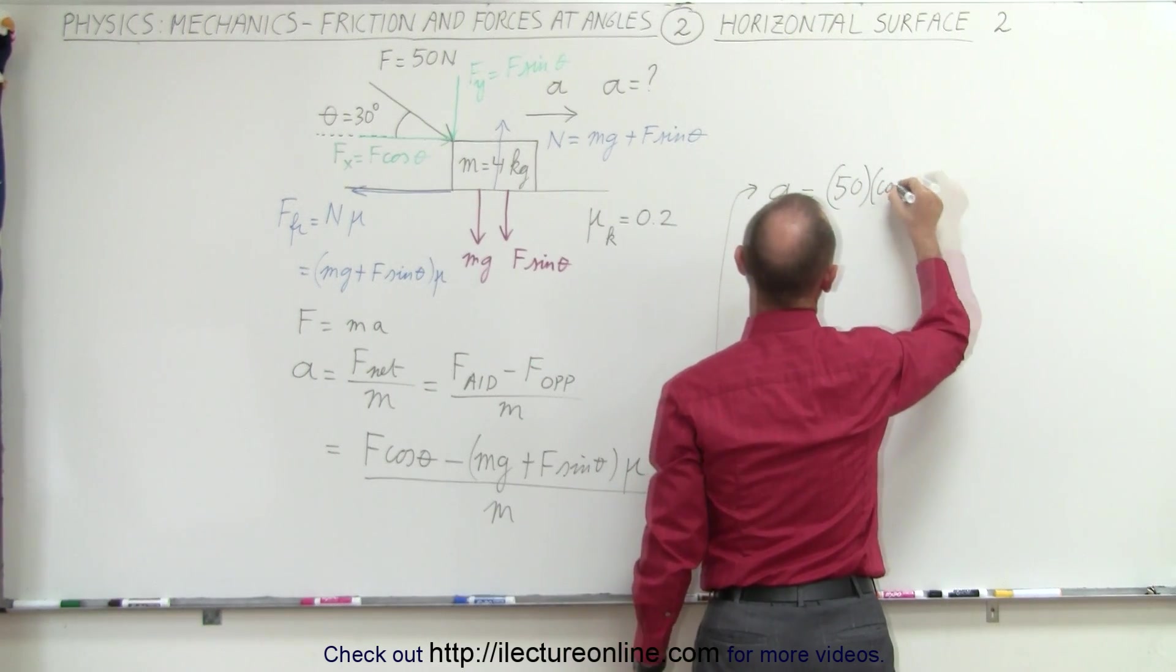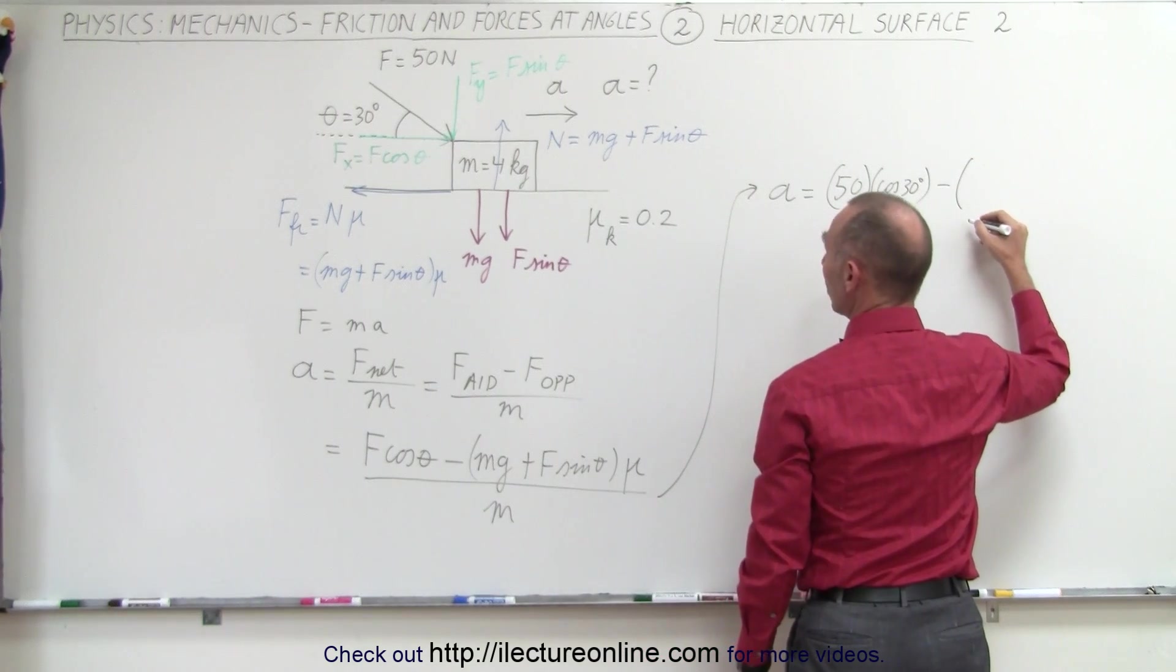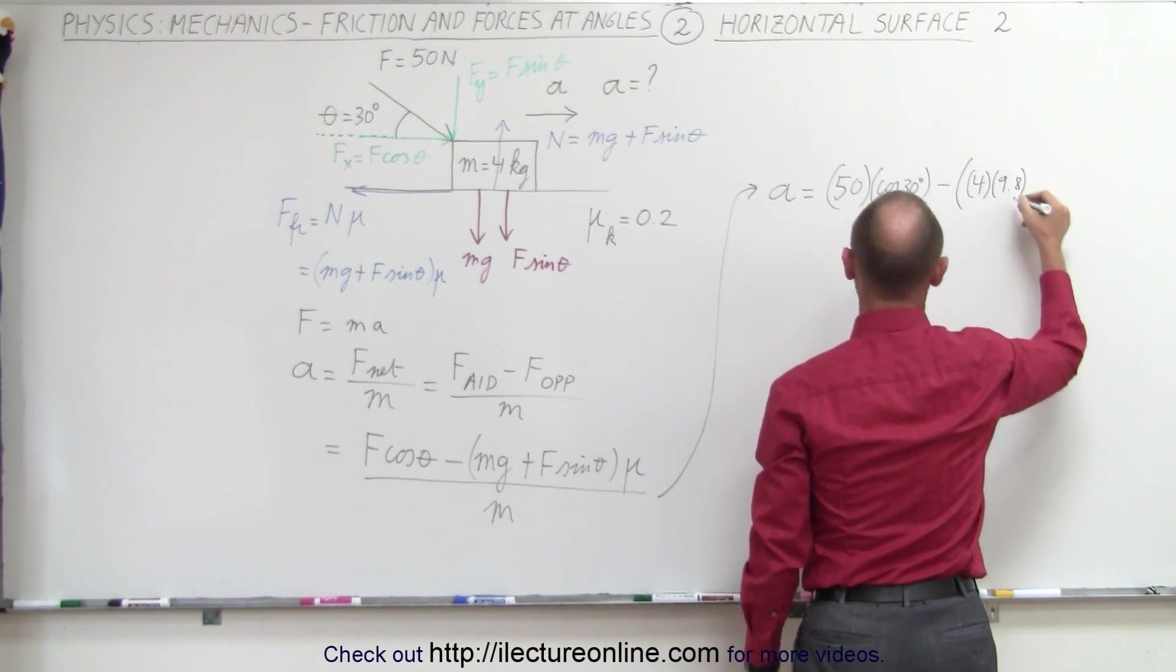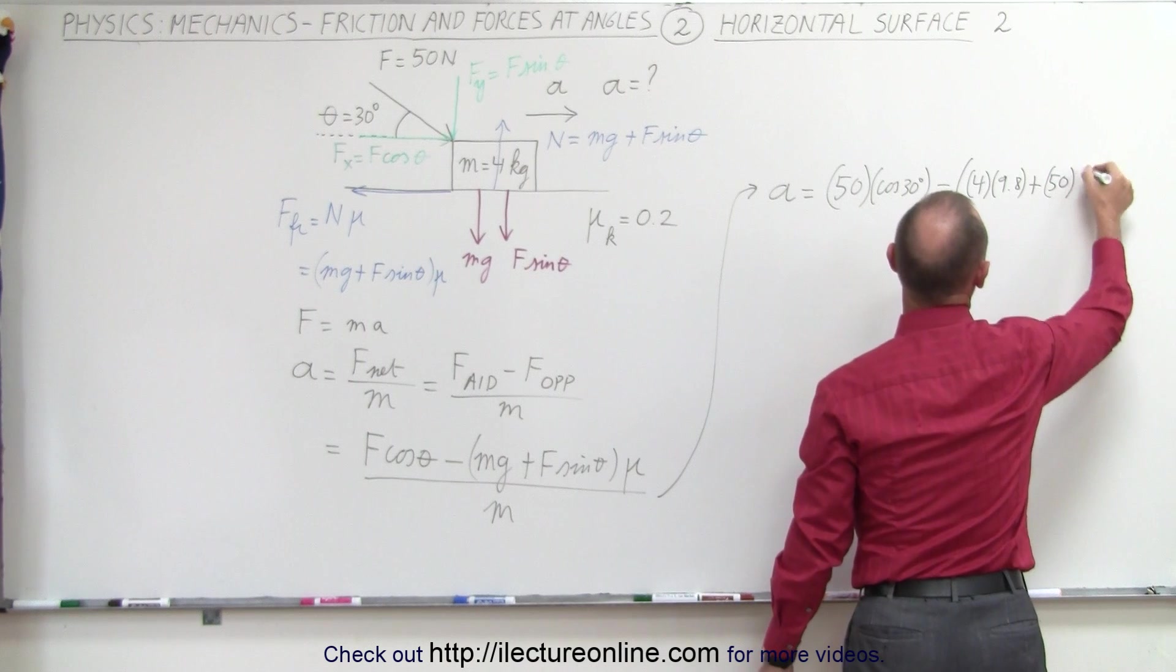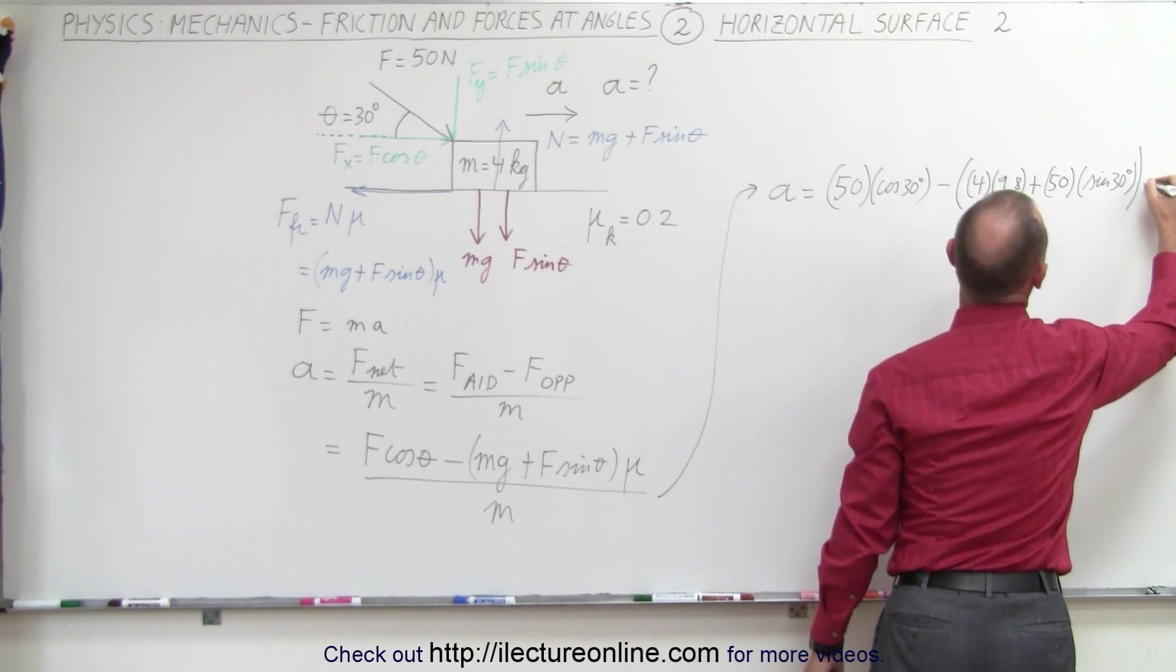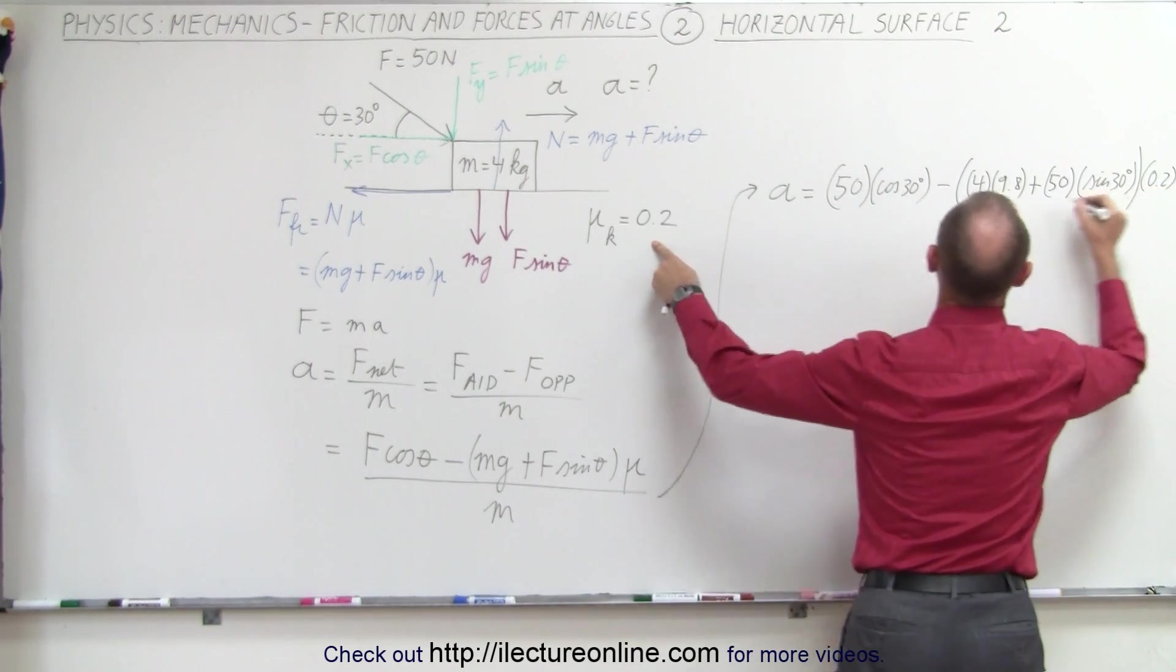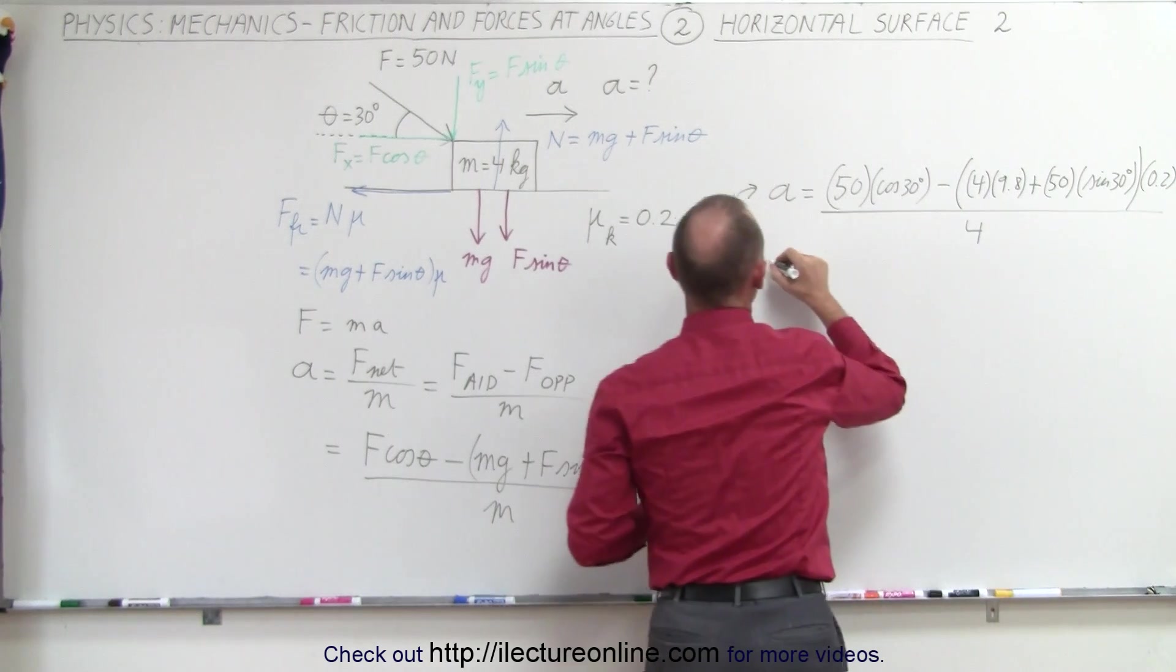And subtract from that the quantity mg, which is 4 times 9.8, plus the force 50 newtons times the sine of 30 degrees, and the whole thing multiplied times the coefficient of friction, which is 0.2. Then we divide all that by the mass, which is 4 kilograms.